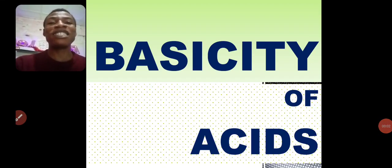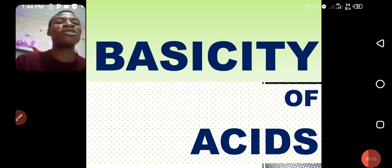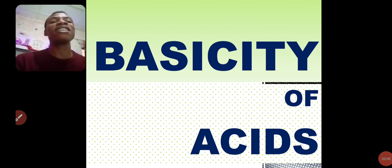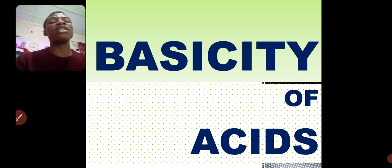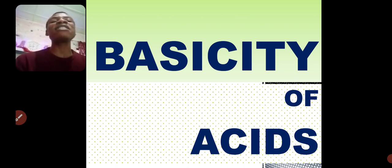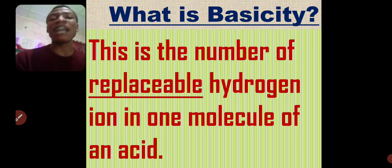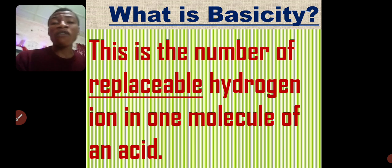Good day students, this is your teacher. Today we'll be talking about basicity of acids. Last class we talked about the fact that acids must have hydrogen in their molecule. According to Arrhenius theory, there must be hydrogen in acids. So today we talk about basicity of an acid. Basicity is the number of replaceable hydrogen ions in one molecule of an acid.